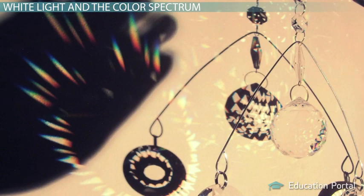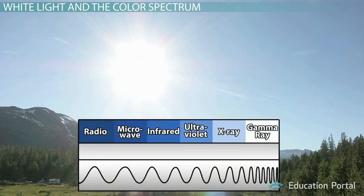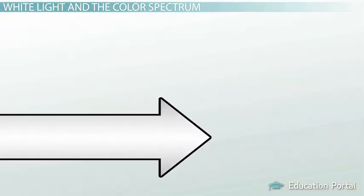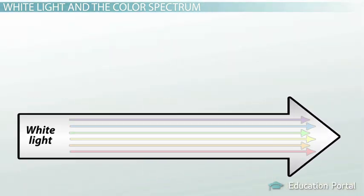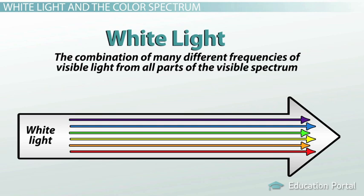You can also see a rainbow when sunlight passes through a crystal decoration or even the peephole in your front door. Sunlight and other white lights are actually made of many different frequencies. The sun emits infrared and ultraviolet waves in addition to the full spectrum of visible light. We don't see the infrared and UV waves, but we do see the full range of visible color all bundled together in the form of white light.